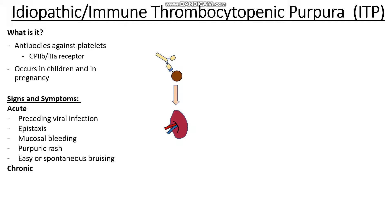If we have this as a chronic condition — when the thrombocytopenia lasts for a long time — our spleen tends to eat more and more of our platelets. So therefore patients actually tend to develop splenomegaly.